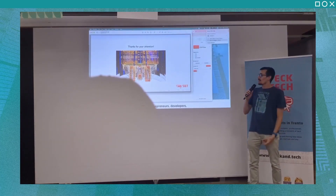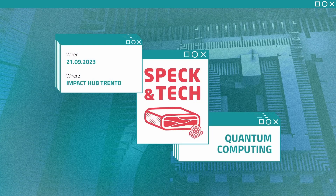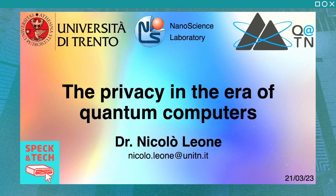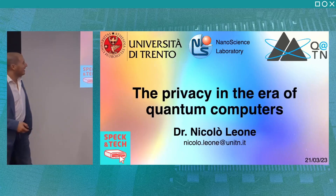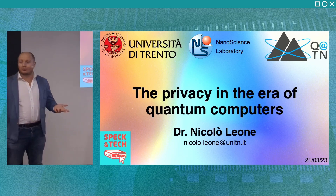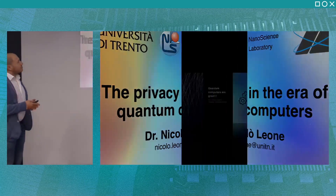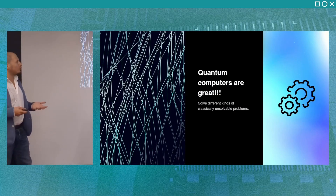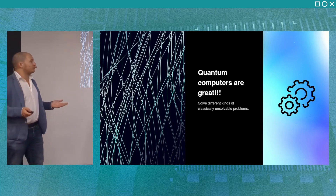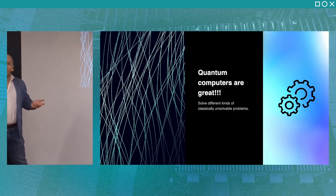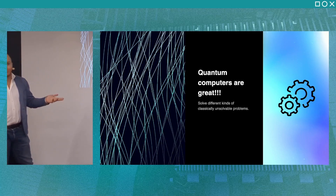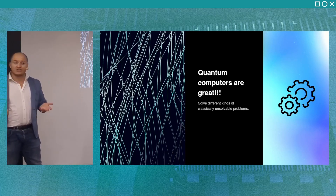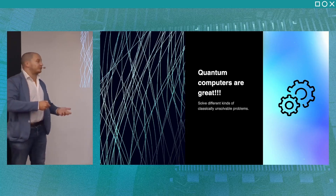Thank you everyone for this warm welcome and thank you to the organizers for having invited me. I'm Niccolò Leone, also a physicist, and I want to present some of the drawbacks of having a universal quantum computer — in particular, I want to focus on privacy. Quantum computers can solve many problems impossible for classical computers, and as we saw, Shor's algorithm is quite good at factorizing big numbers, including large prime numbers. Security in the exchange of information is entirely based on the difficulty of factorizing such big numbers.